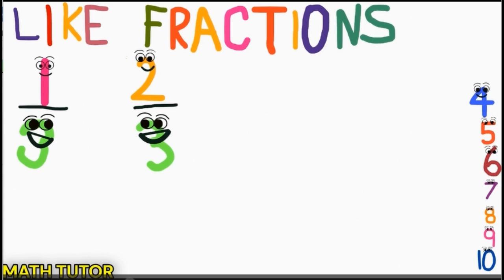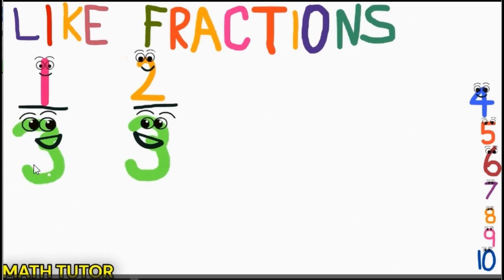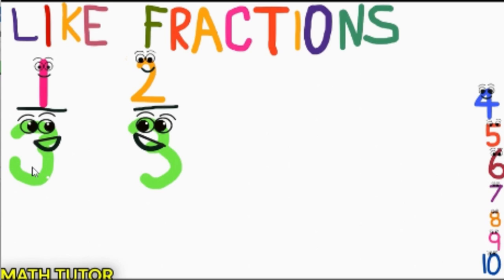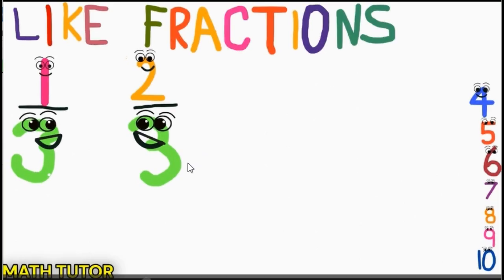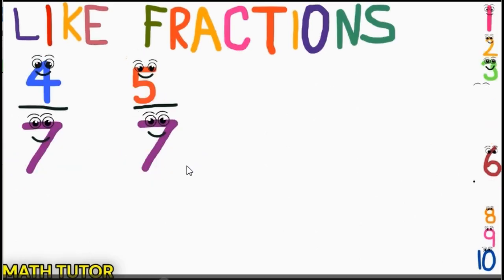If we can see here, 3 is the denominator for the first fraction, and 3 is also the denominator for the second fraction. Same denominator means it is a like fraction. Let us see one more example: 4/7 and 5/7.